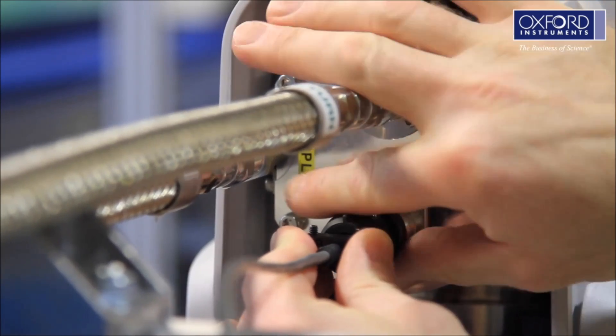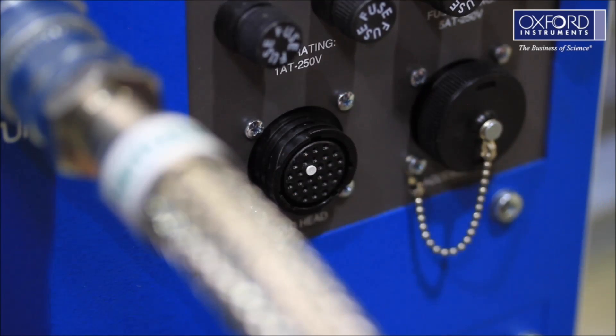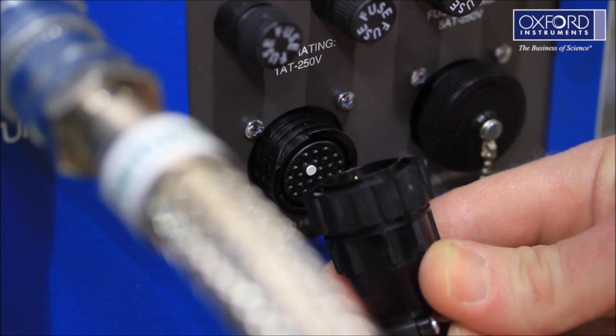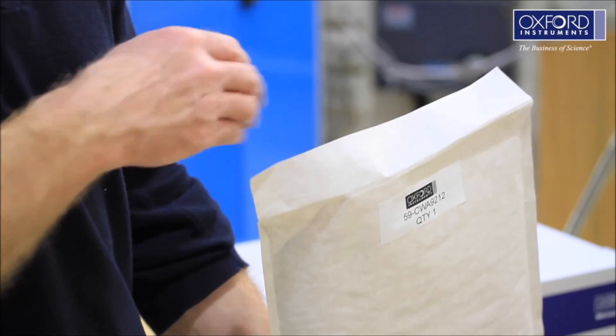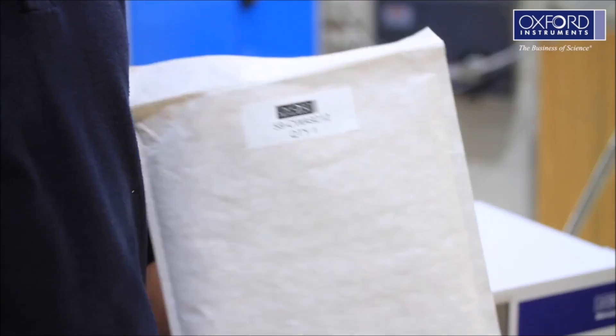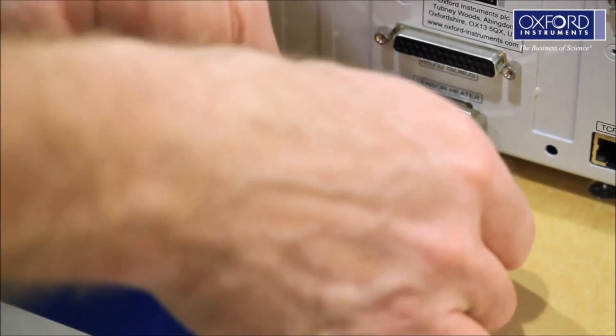Connect the cold head power cable to the cold head and to the compressor. Connect the cryostat cable to the back of the mercury ITC, making sure to do up the retaining bolts.